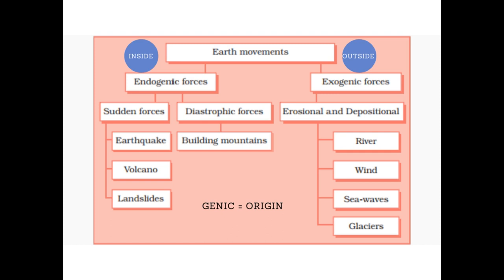There are two types of endogenic force: one is sudden force and the other is diastrophic force. Sudden forces are quick and sudden — examples are earthquakes, volcanoes, and landslides. Whereas diastrophic forces are slow; they occur in a very gradual manner. A good example is mountain formation.